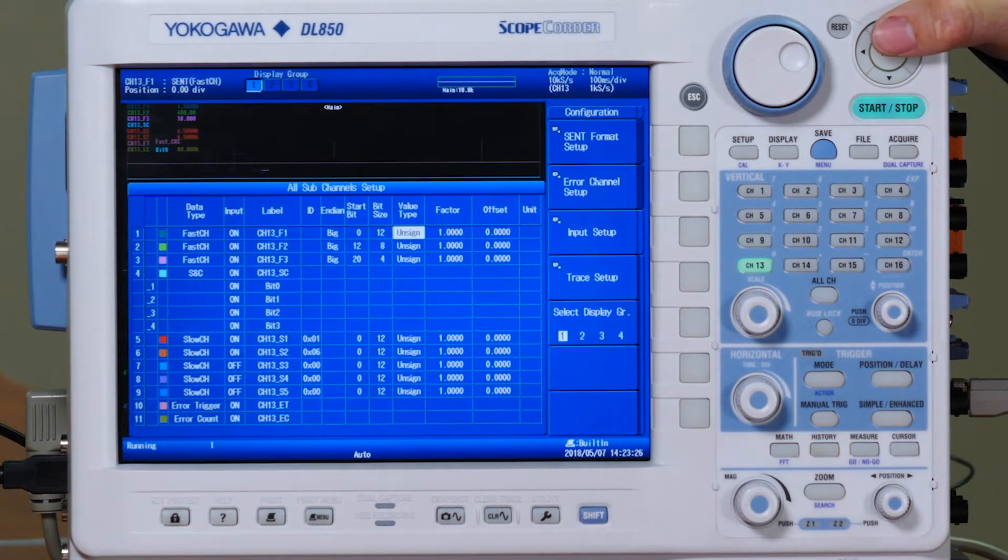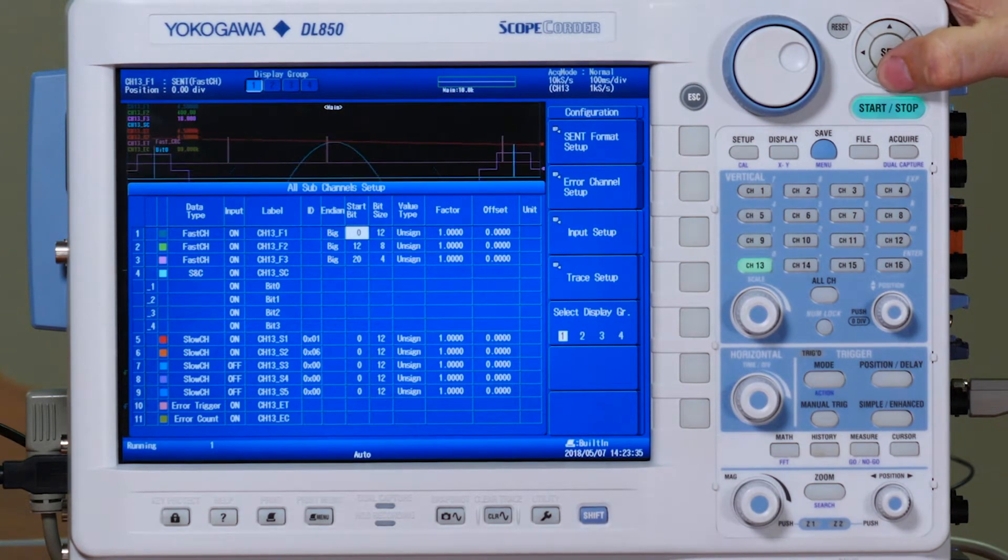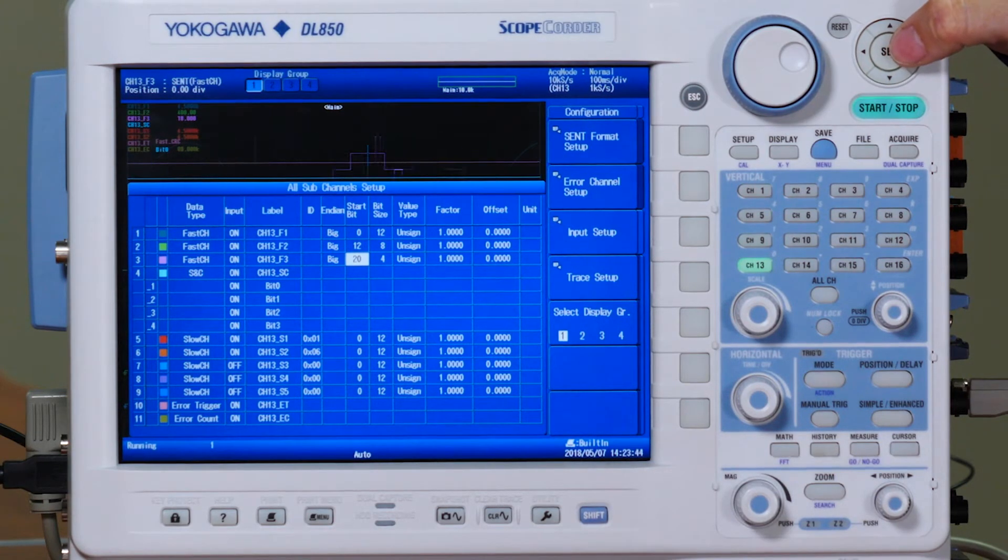Our demo board sends out a 12-bit sine wave on fast channel 1, an 8-bit saw wave on fast channel 2, and a 4-bit inverted sine wave on fast channel 3. Knowing this, we can adjust our start bits to the appropriate settings.